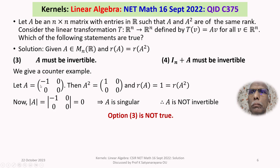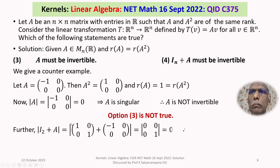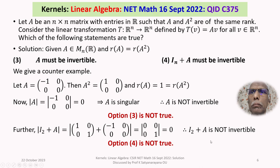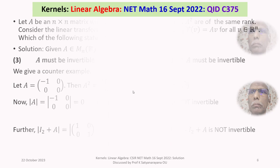Using the same matrix A = [(-1,0);(0,0)], we consider I_2 + A. Adding the identity matrix (1,0;0,1) to A gives the matrix (0,0;0,1), whose determinant is 0. Therefore I_2 + A is singular and not invertible. Thus, option 4 is also not true. Both options 3 and 4 are false.